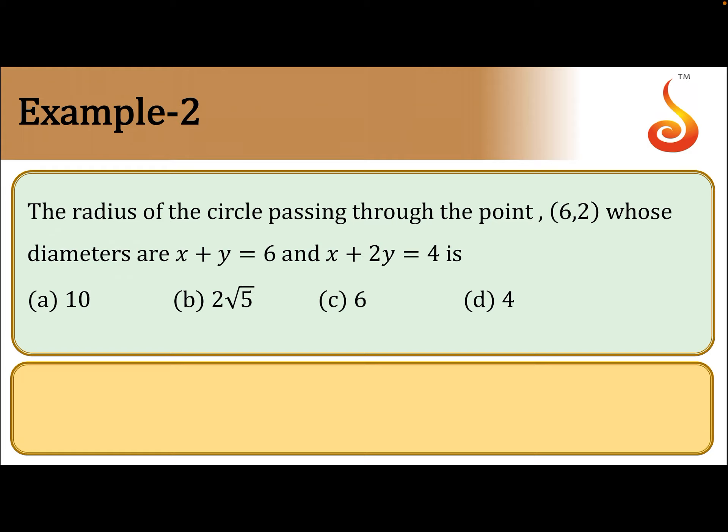Example 2. The radius of the circle passing through the point (6,2) and whose diameters are x+y=6 and x+2y=4.